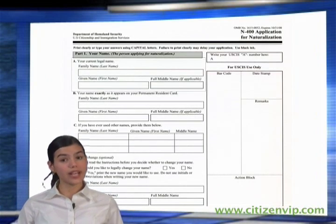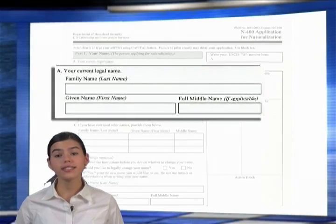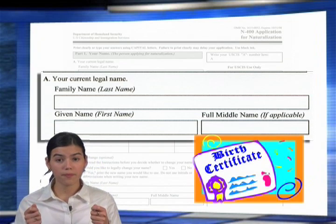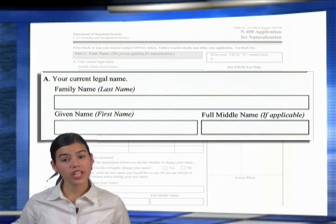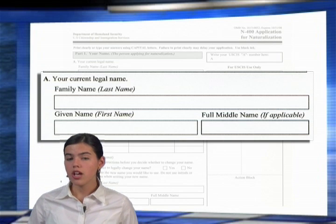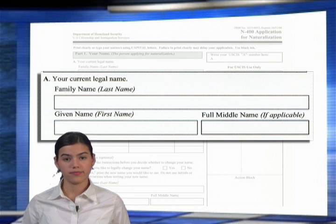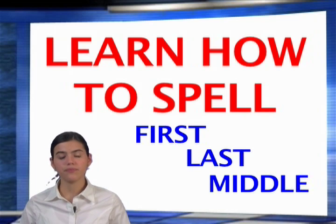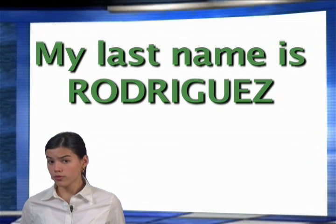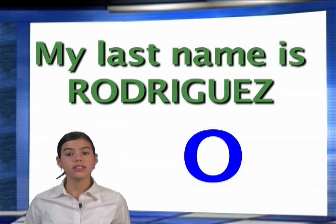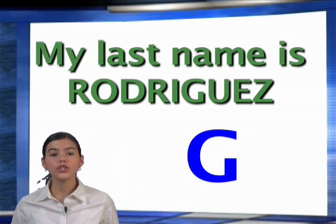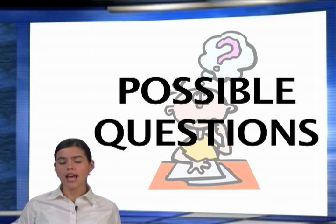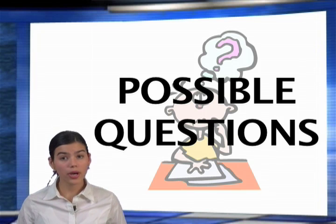In Part 1, Section A, you need to know your current legal name. Your current legal name is the name on your birth certificate. This name can only change after birth by a legal action such as a marriage or court order. Learn how to spell your first, last, and middle name. For example, my last name is Rodriguez — R-O-D-R-I-G-U-E-Z. Here are some of the possible questions that can be asked of you from Part 1 about your name.